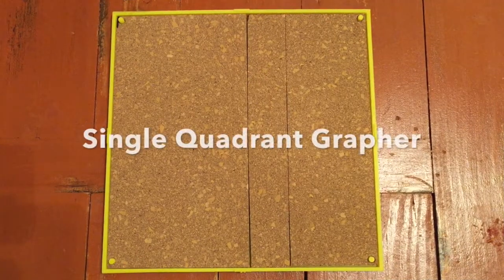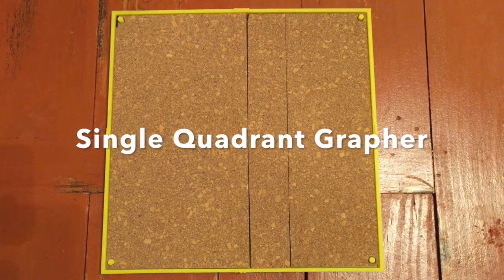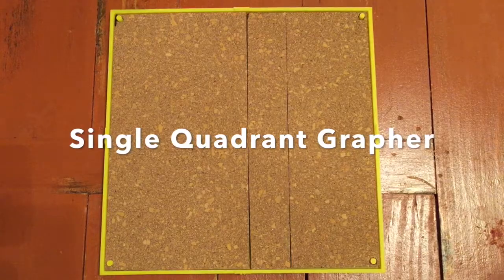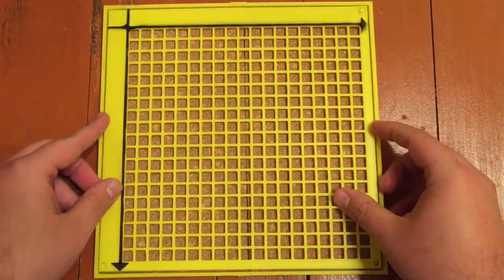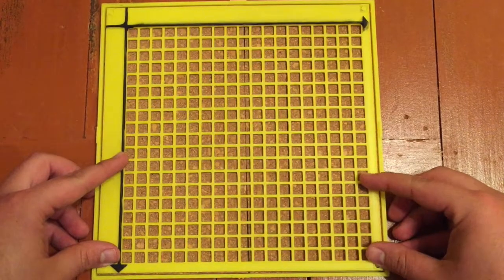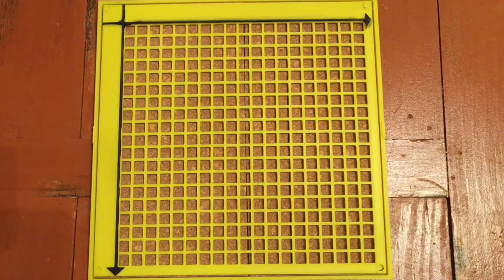Single quadrant grapher: This is built off the same design as the quadrant math grapher. The only difference is that instead of four quadrants, there is only one, which allows more room to plot on a specific quadrant. Depending on the placement in relation to the user, any of the four quadrants can be represented at one time.